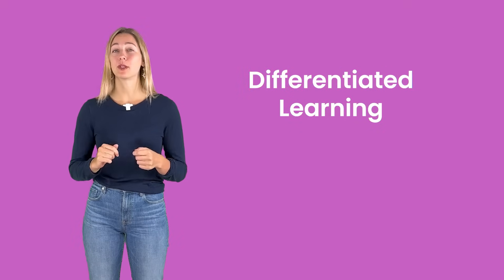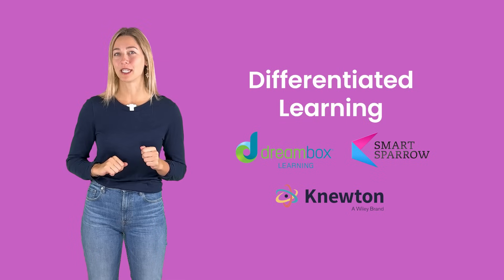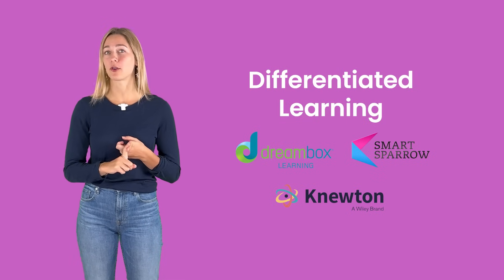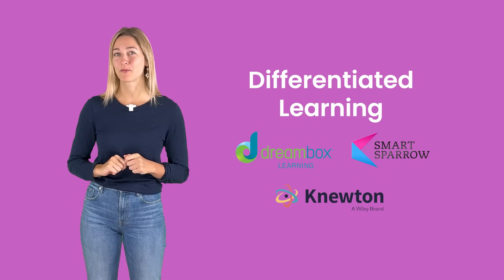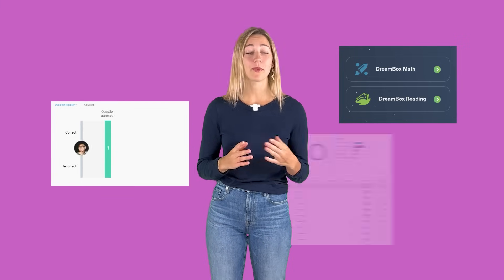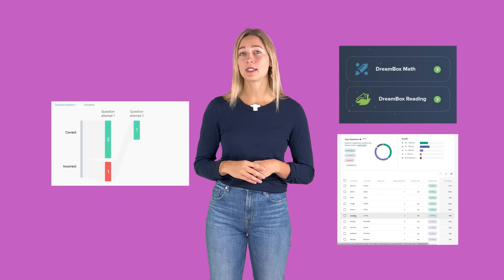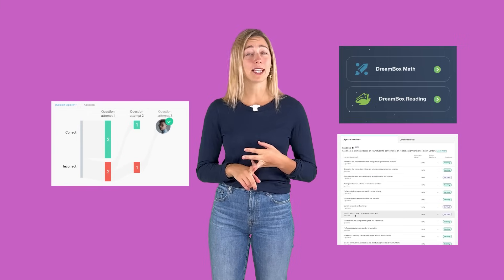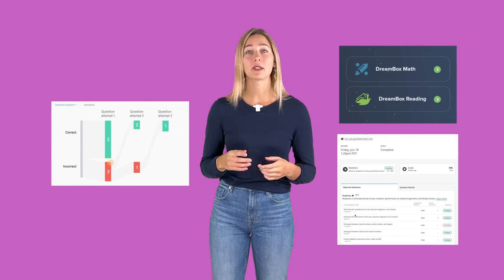For help with differentiated learning, use tools like Dreambox, Smart Sparrow, and Newton. Design custom learning paths for students based on their own strengths, weaknesses, and learning preferences. Dreambox for math and reading, Smart Sparrow for general differentiated learning, and Newton for other STEM subjects analyze student data like assessment scores, attendance records, and even behavioral patterns to recommend personalized learning material. All this is based on their individual learning styles, progress, and abilities, providing opportunities for self-directed learning and mastery-based progression, allowing students to work at their own pace and focus on areas where they need the most support.